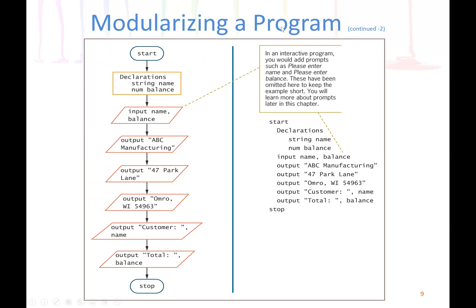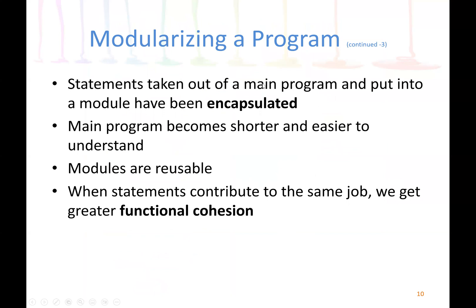In this example of modularizing a program, we start by declaring our variables, then handle input, balance, and output. This is a full program that we may decide to modularize by writing one function to get input and another module to handle output, then calling them in the main function. When statements are taken out of the main program and placed into a module, they have been encapsulated — a concept from object-oriented programming related to the security of data members.